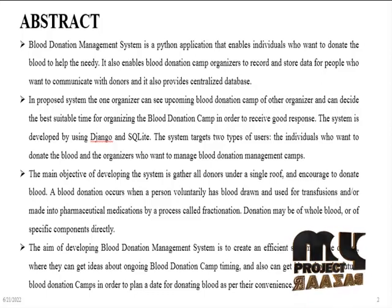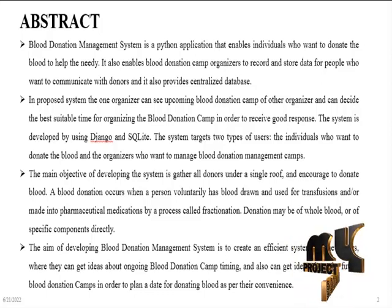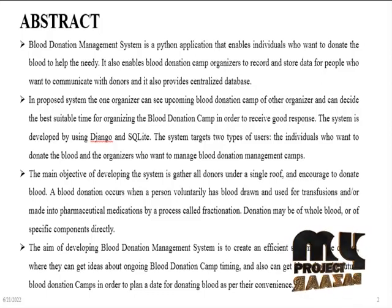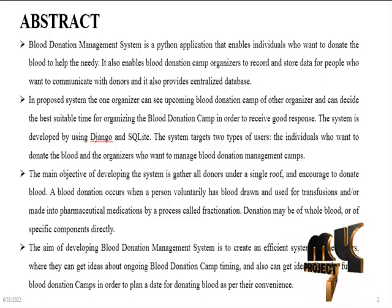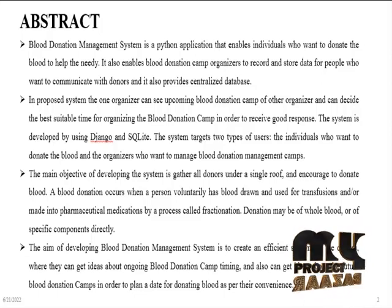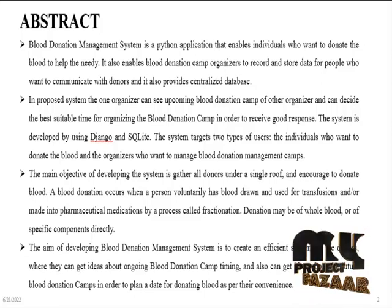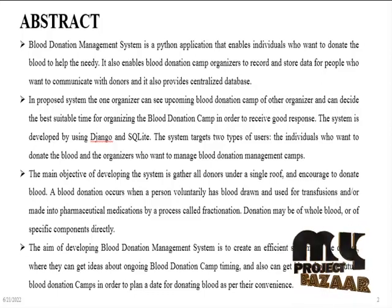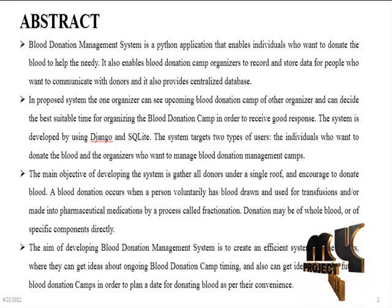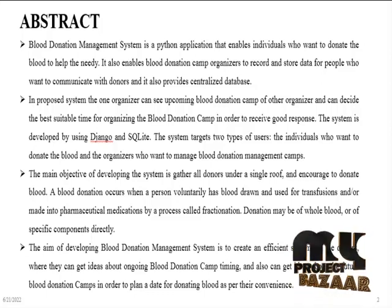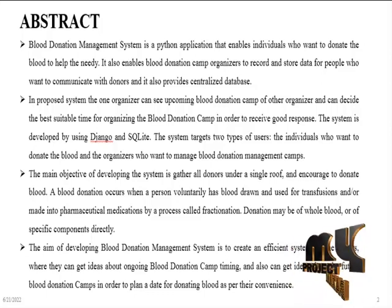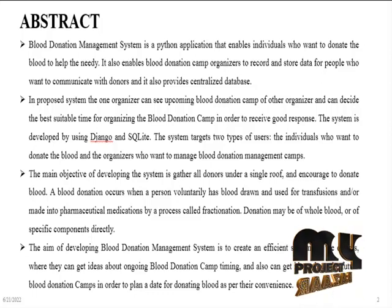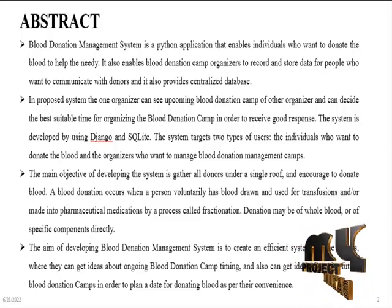In the proposed system, one organizer can see upcoming blood donation camps of other organizations and can receive the best suitable time for organizing a blood donation camp in order to receive a good response. The system is developed using Django and SQLite database. The system targets two types of users: individuals who want to donate blood, and organizers who want to manage blood donation.